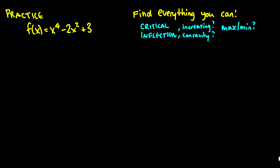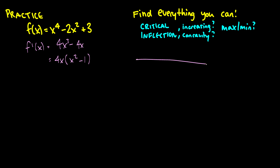Now for the practice problem, we start by taking the derivative, giving us 4x cubed minus 4x. We factor out 4x to get 4x(x squared minus 1), and our critical points on the number line are x = −1, 0, and 1. This is our f prime number line.